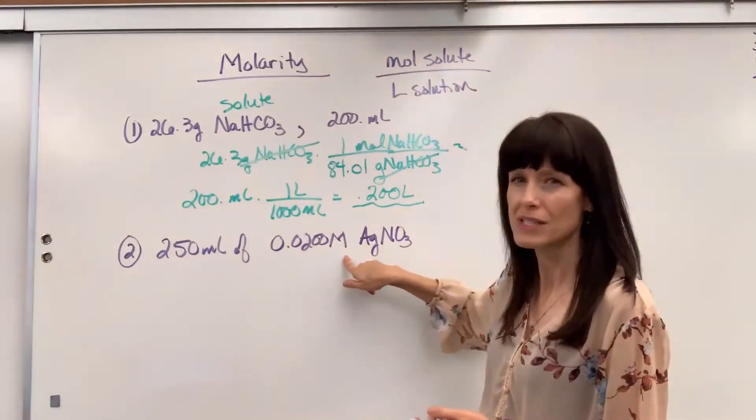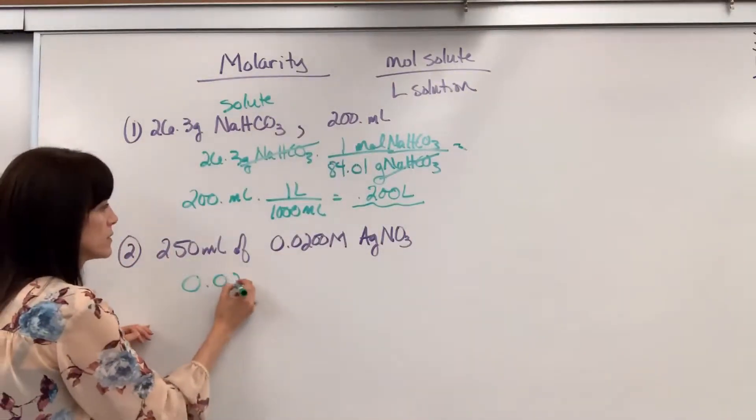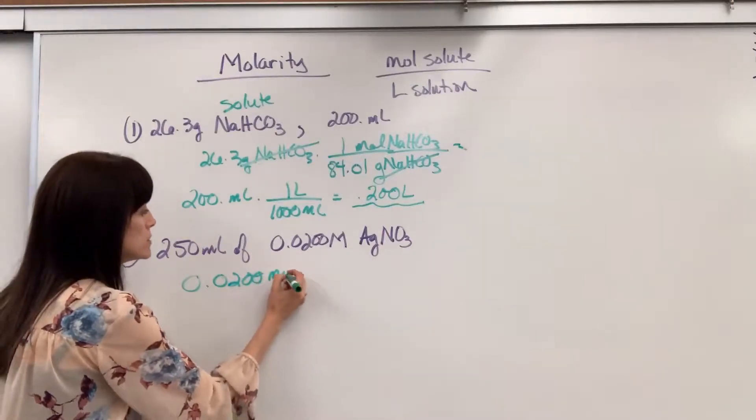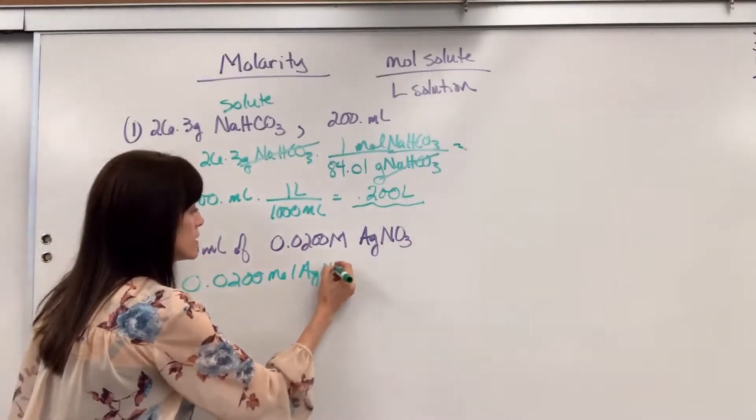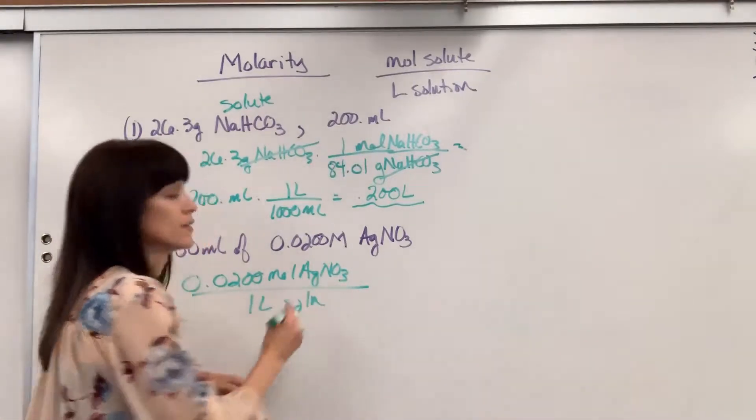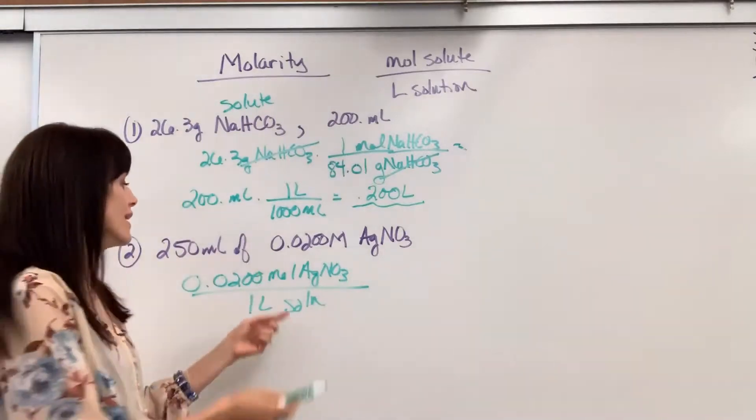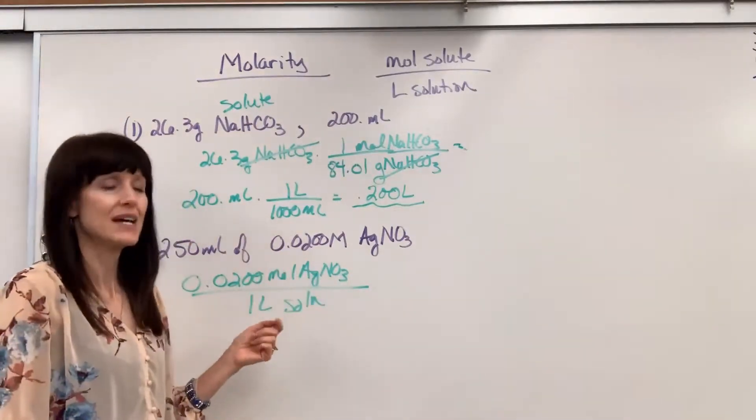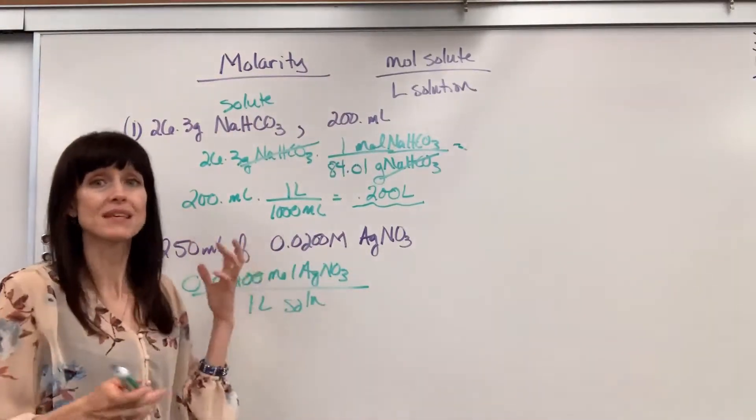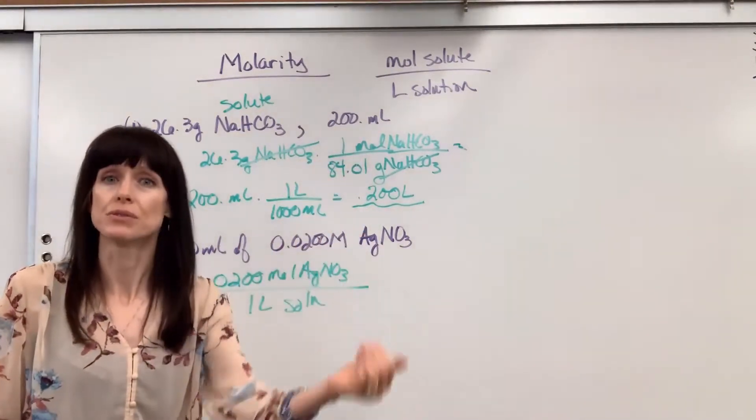Remember what I said, I always break out molarity. That is 0.02 moles of silver nitrate for every one liter of my solution. Okay, this is where it opens up for me. I see moles of silver nitrate. If I can get those moles by themselves, that means I can use molar mass to go from moles to grams.